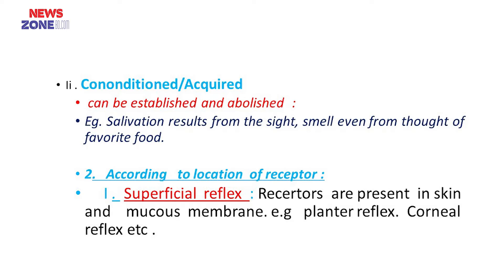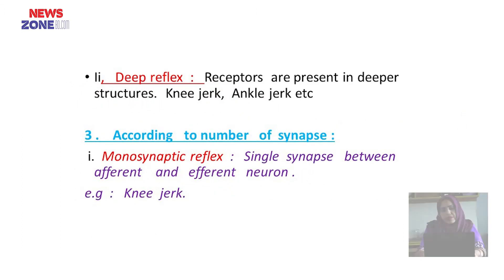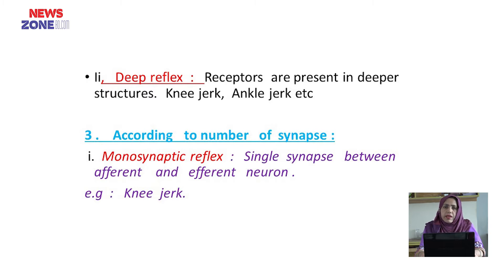Number 2, reflex is classified according to the location of the receptor — that is, superficial reflex and deep reflex. In case of superficial reflex, receptors are present in skin and mucous membrane. Examples are plantar reflex and corneal reflex. For deep reflex, receptors are present in deeper structures, such as in knee jerk and ankle jerk.